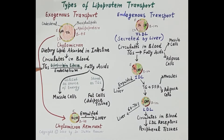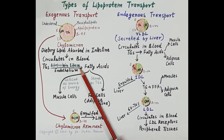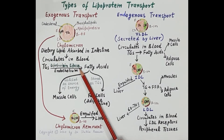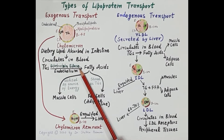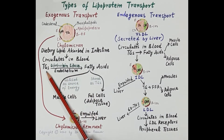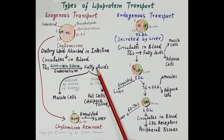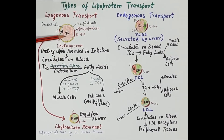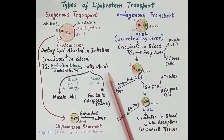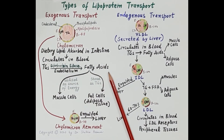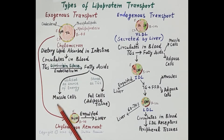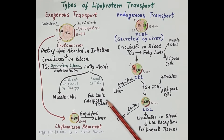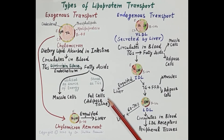Endothelium-bound lipoprotein lipase is an enzyme that hydrolyzes triglycerides stored in the hydrophobic core of chylomicrons into fatty acids. These fatty acids pass into muscle cells and adipose tissue. In muscle cells, these fatty acids are utilized as a source of energy.